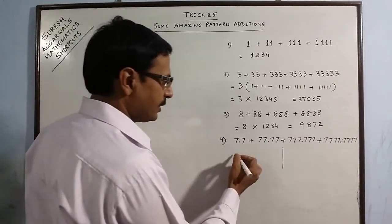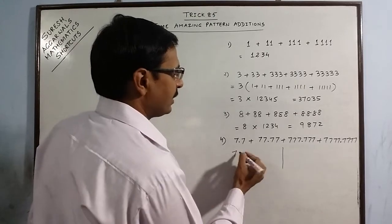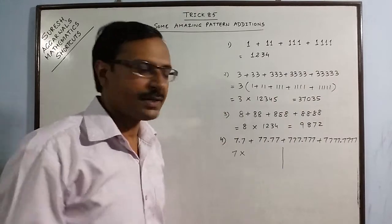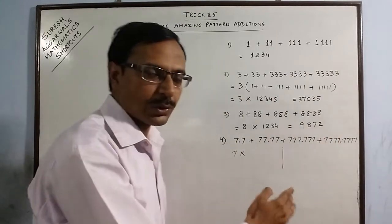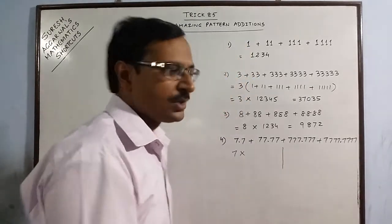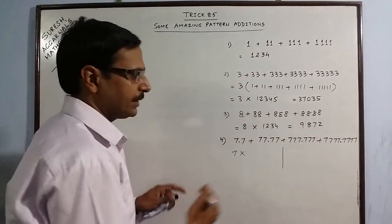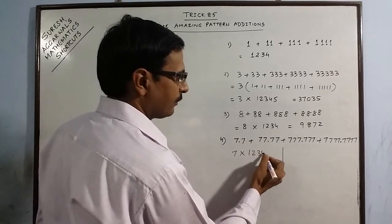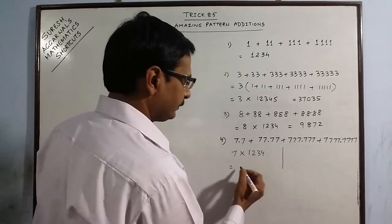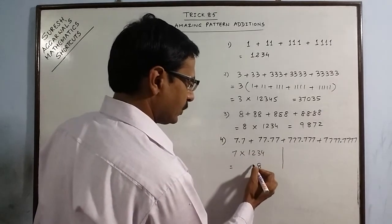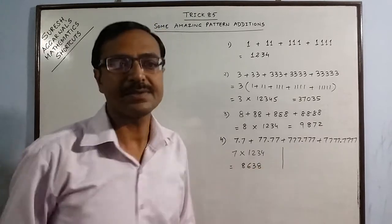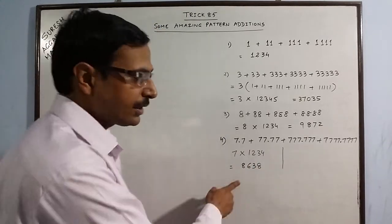Step one: since seven is common, first multiply seven by 1234 — just forget that there is something after the decimal, so the question becomes 7 + 77 + 777 + 7777. That gives 7 × 1234, and the product is 8638.